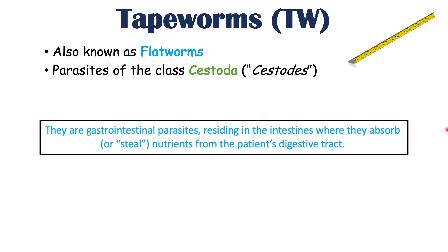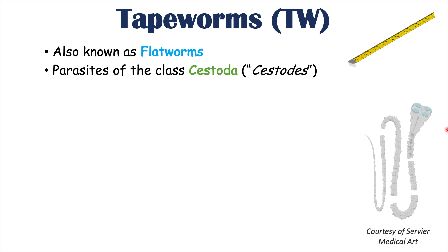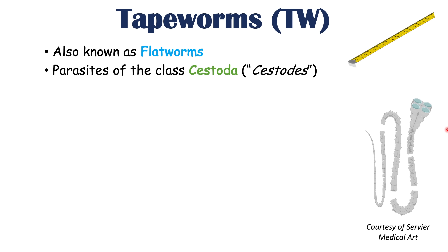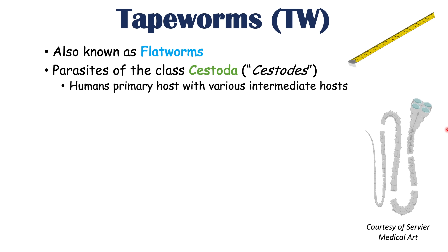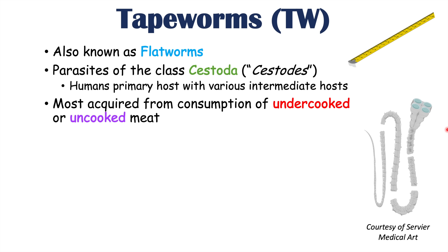Tapeworms are parasites of the class Cestoda and can often be referred to as cestodes. There are many different species of tapeworms, but the species we're going to talk about in this lesson have humans as a primary host, and each species has a different intermediate host. Most often, humans are infected by tapeworms through consumption of undercooked or uncooked meat products. They can also be infected by ingestion of a contaminated or infected flea from a cat or dog, which occurs with one particular species we'll discuss on the next slide.